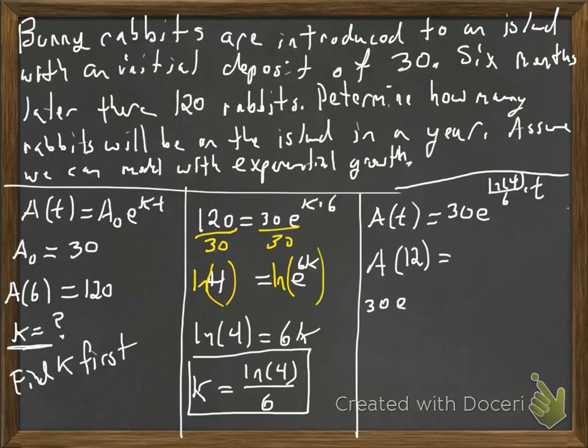And it's pretty much home free. I'll write it down how you would plug it into your calculator. Okay. Make sure you have that parentheses all around that exponent there. Okay. And after a year, there are 480 bunny rabbits, assuming, you know, there's no predators, the weather's nice. There's plenty to eat, plenty of room. Okay.